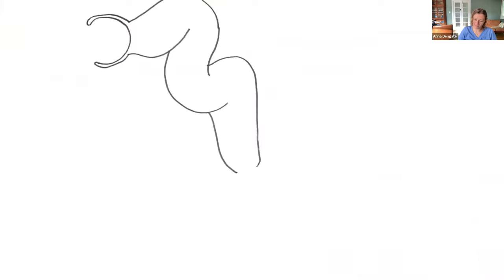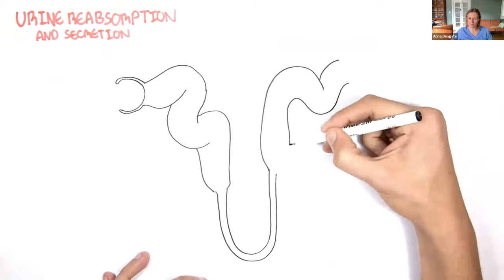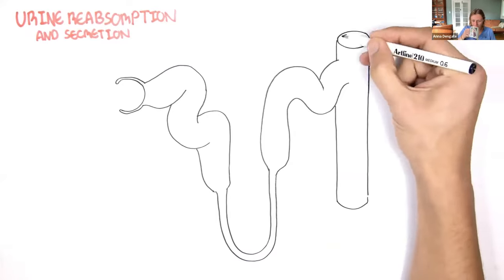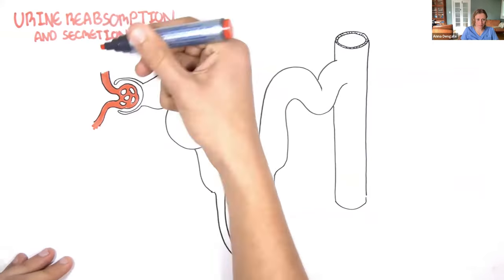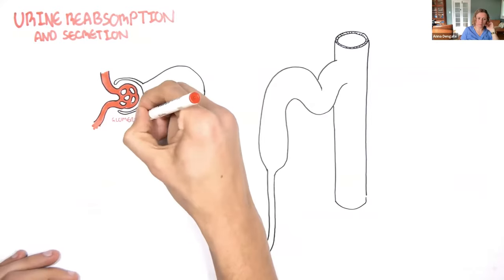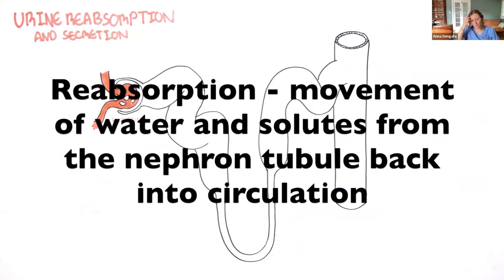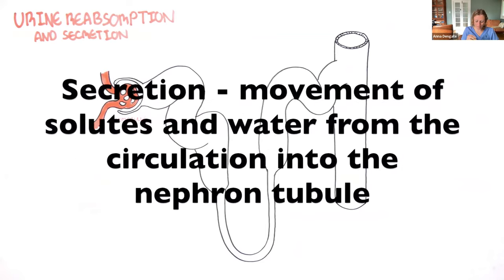[Video] The kidneys are very important organs. Functional units of the kidneys are the nephrons — millions in each kidney. The nephrons are important in forming urine. There are four main steps in urine formation: filtration, reabsorption, secretion, and excretion. In this video we will focus mainly on reabsorption and secretion. It's important to understand some terminology: reabsorption refers to the movement of water and solutes from the nephron back into circulation; secretion is the movement of solutes from circulation back inside the nephron tubule.